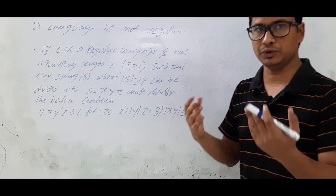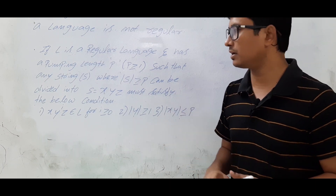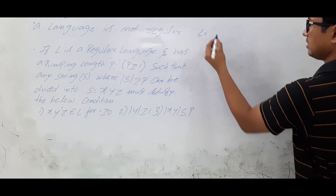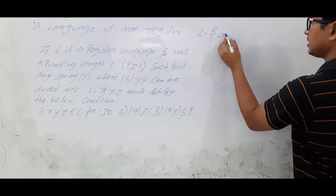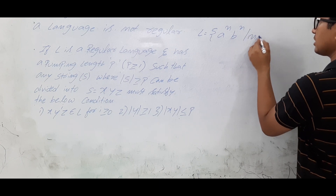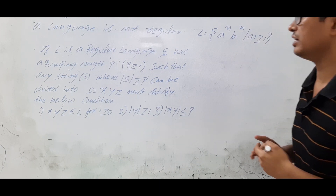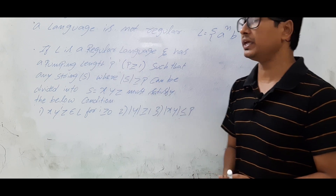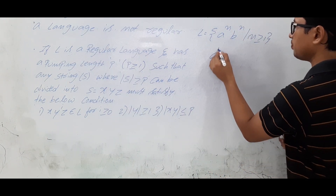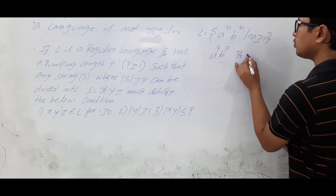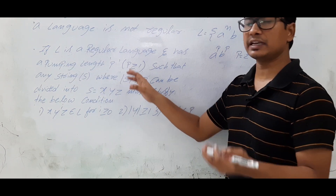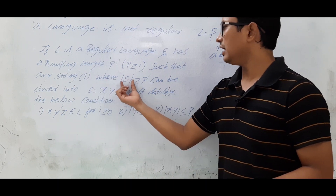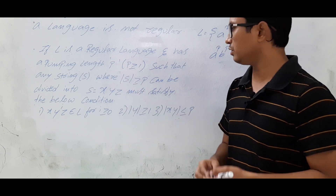With that explanation alone you may not understand the pumping lemma theorem, so we will discuss it now. If you take a language L and say that it is a^n b^n where n is greater than or equal to 1 — this is the language I have taken — if you are saying that it is a regular language, then it has a pumping length p. I will write it as a^p b^p, and I take p equal to 2 since p should be greater than or equal to 1.